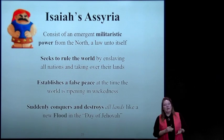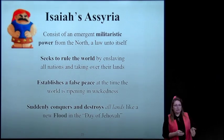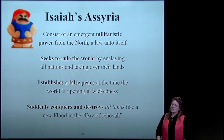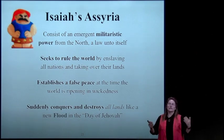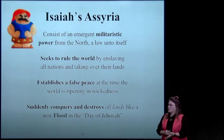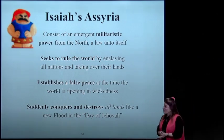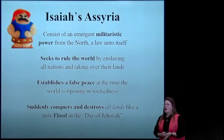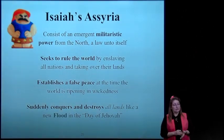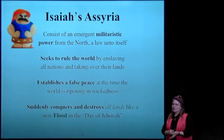Isaiah's characterization of these nations is most pertinent to our definition because he will be who the others build on. Isaiah's Assyria: it consists of an emergent militaristic power from the north—again, there's that 'from the north.' A law unto itself. It seeks to rule the world by enslaving all nations and taking over their lands.